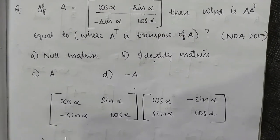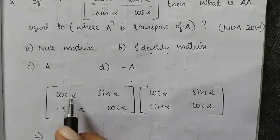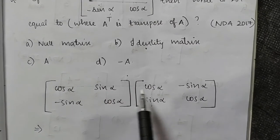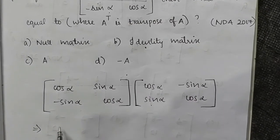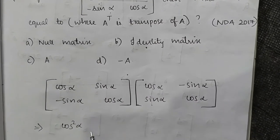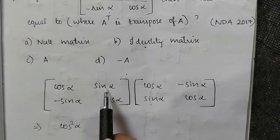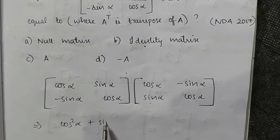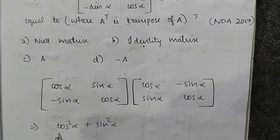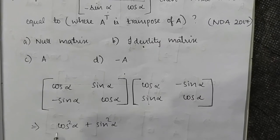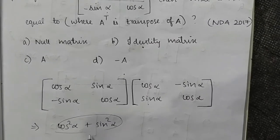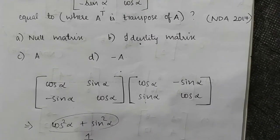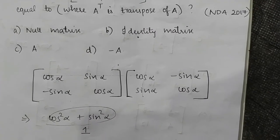Now we multiply A times A transpose. We multiply the first row into the first column: cos alpha into cos alpha gives cos squared alpha, plus sin alpha into sin alpha gives sin squared alpha. Using the trigonometric identity, sin squared alpha plus cos squared alpha equals 1.